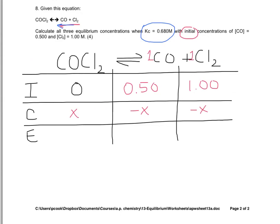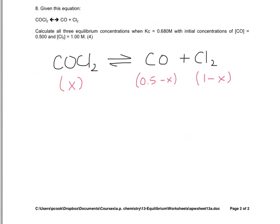And now we finally have a point where we can plug in our equilibrium concentrations. So for the case of CoCl2, it'll be X. For carbon monoxide, it'd be 0.50 minus X. And for Cl2 would be 1 minus X. Okay, so we have our equilibrium concentrations here shown in red.